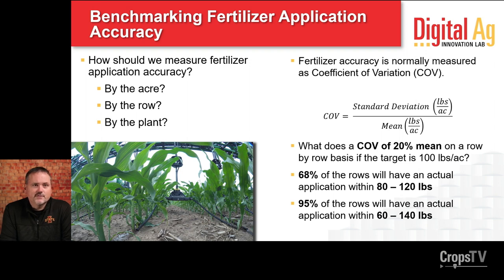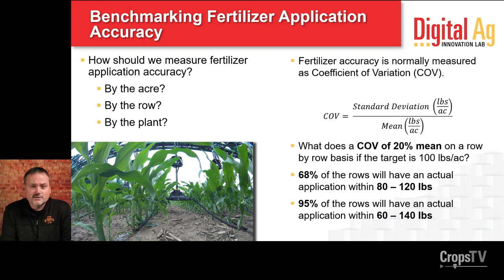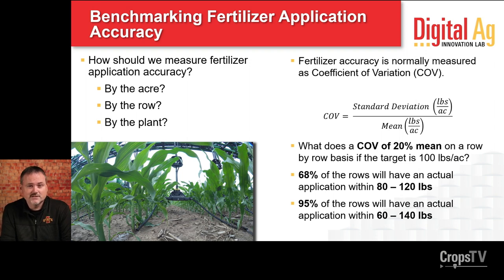When we think about accuracy, are we talking accuracy per acre, per row, or per plant? Historically, fertilizer accuracy has been discussed at the acre or field level — you order 10 tons, you expect 10 tons applied. With the use of aerial imagery, particularly drones today, and the ability to see differences in the field much more easily, it's forcing us to think about fertilizer distribution accuracy on a row-by-row level. Those row-by-row differences are really what creates striking or streaking patterns within the field that are visible to us.